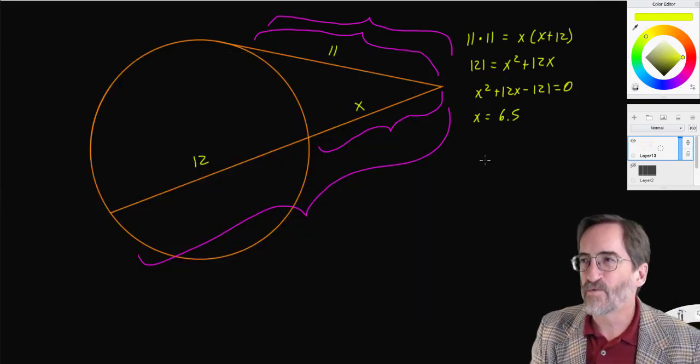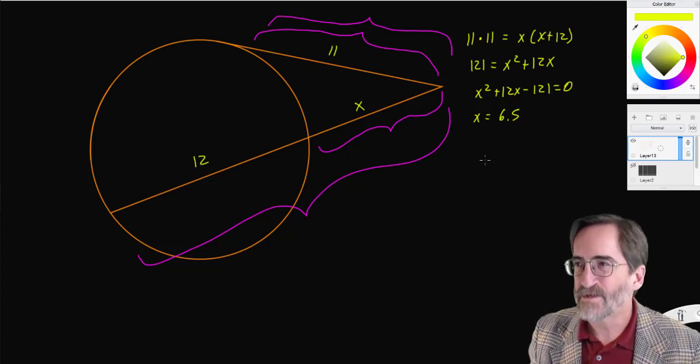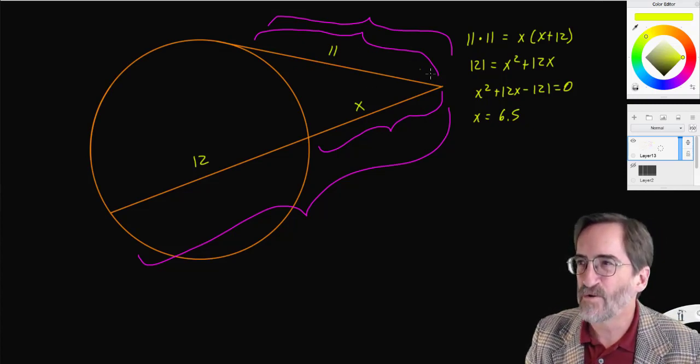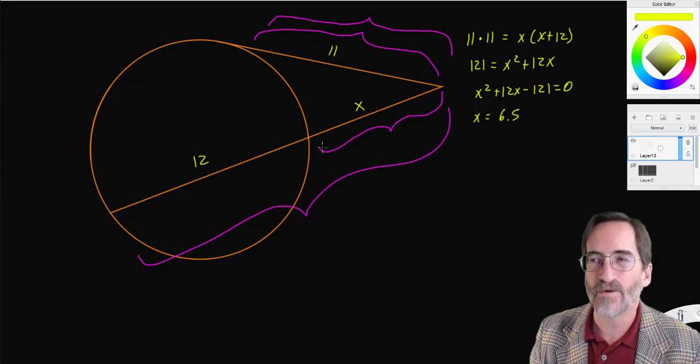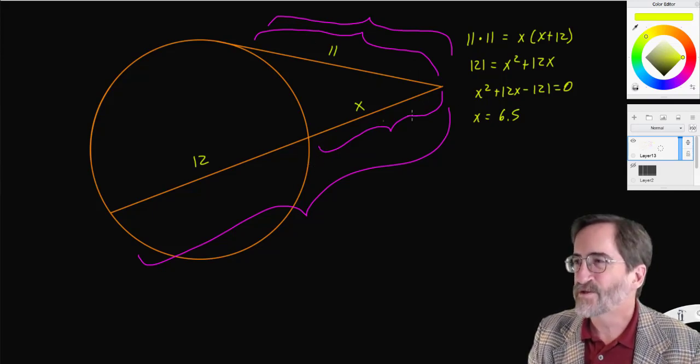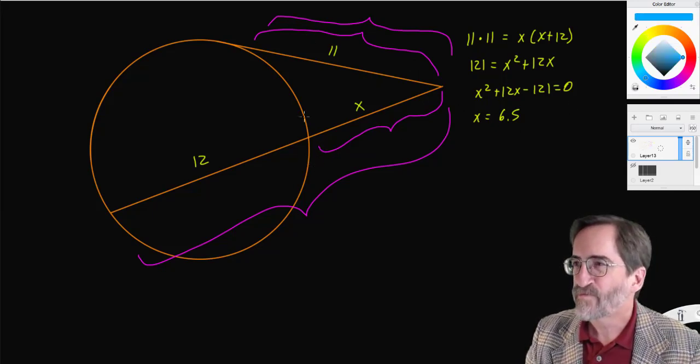So that's how to deal with the distances. Outside part times the whole. It's just that the outside part and the whole are the same thing. Now let's deal with the angles.